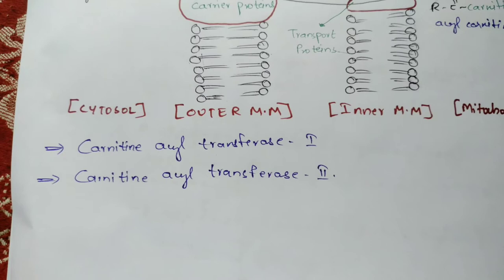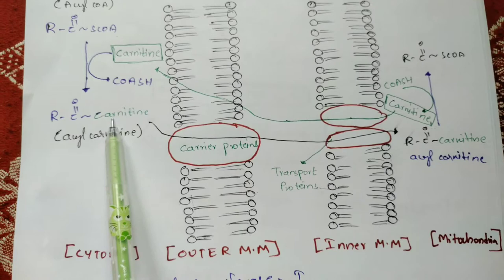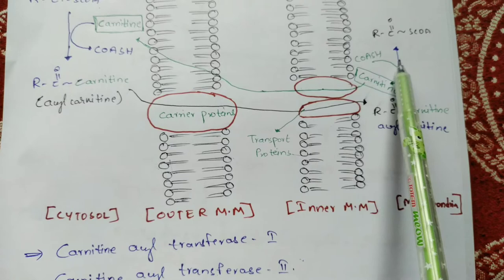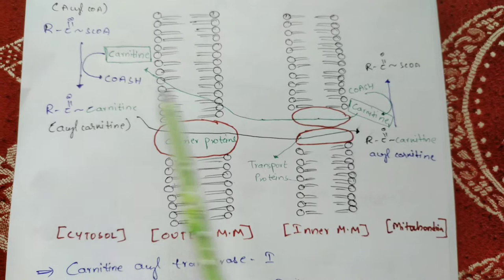Two important enzymes to remember here are carnitine acyl transferase I and carnitine acyl transferase II. Carnitine acyl transferase I is used in the cytosol and converts fatty acyl-CoA to fatty acyl carnitine, while carnitine acyl transferase II is the enzyme used in the mitochondria, which converts fatty acyl carnitine back to fatty acyl-CoA.